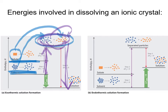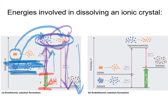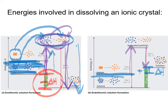The difference between the energy put in and the energy released is the delta H, or heat of solution. Sometimes you put in a certain amount of energy and get out more, giving a negative delta H — an exothermic change. Other times you put in more energy than you get out, giving a positive delta H — an endothermic change. So dissolving crystals can be either exothermic or endothermic depending on the balance of energy in versus energy out.